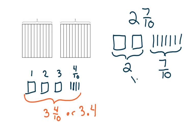So together, it's 2 and 7 tenths. That's the fraction form. Or you could write it as the decimal form, 2 and 7 tenths.